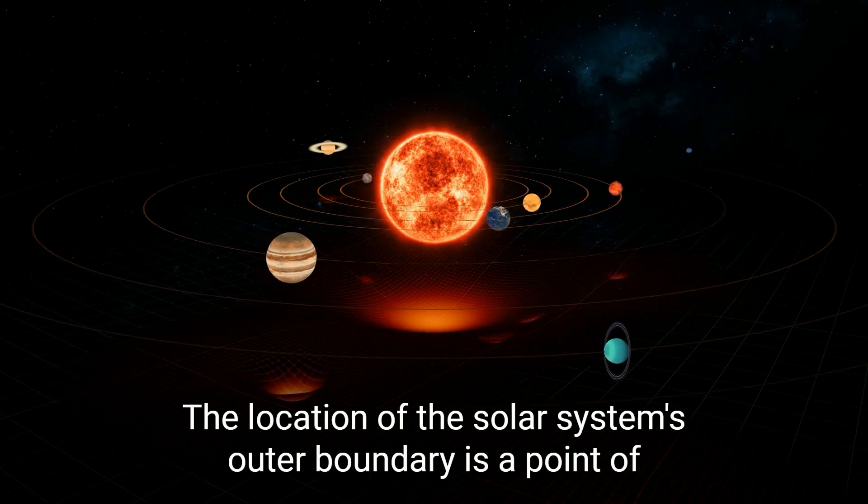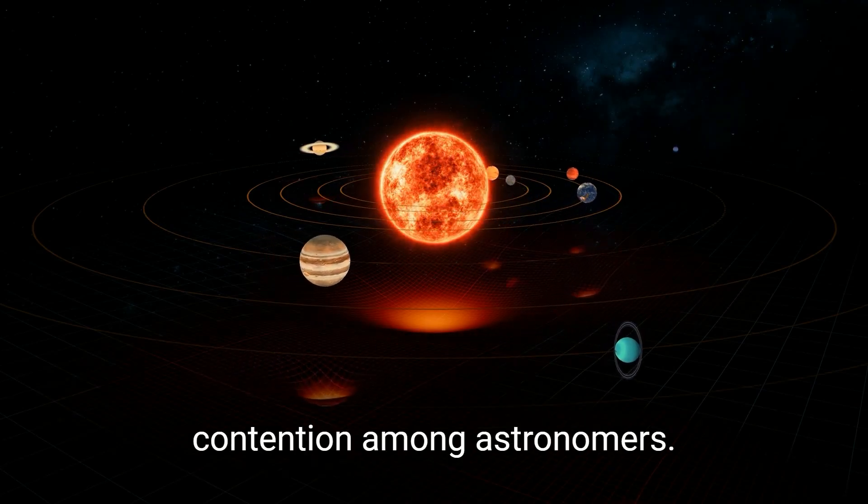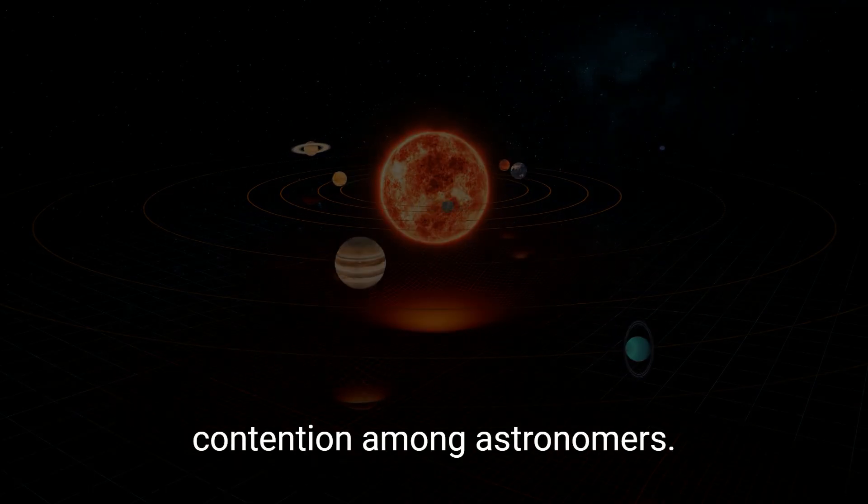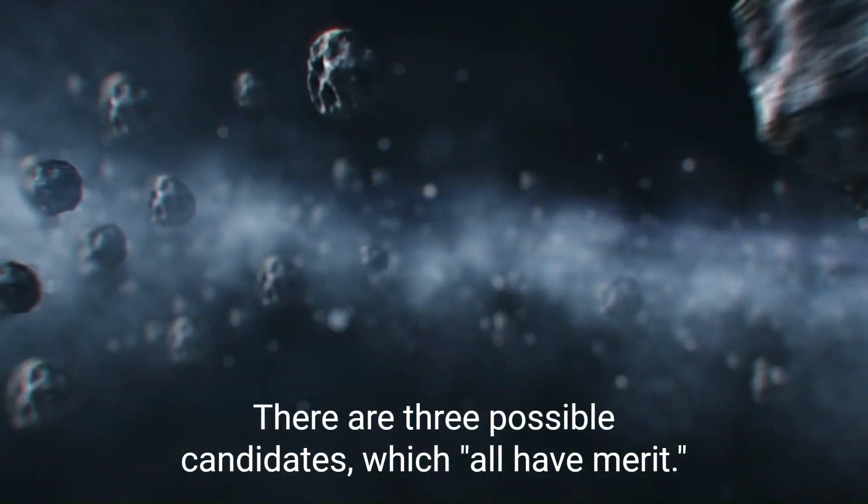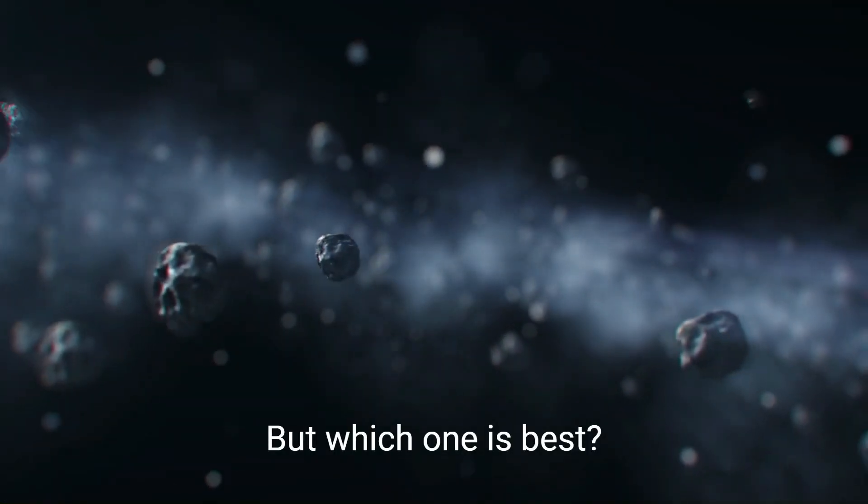The location of the solar system's outer boundary is a point of contention among astronomers. There are three possible candidates which all have merit. But which one is best?